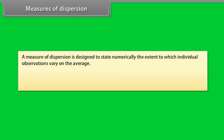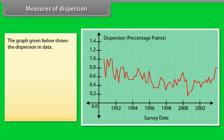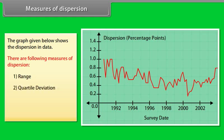Measures of dispersion: A measure of dispersion is designed to state numerically the extent to which individual observations vary on the average. The wider the discrepancy from one observation to another, the larger would be the dispersion. There are following measures of dispersion: Range, Quartile deviation, Mean deviation, and Standard deviation.